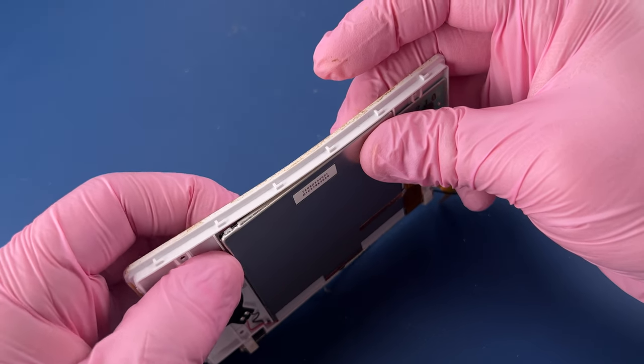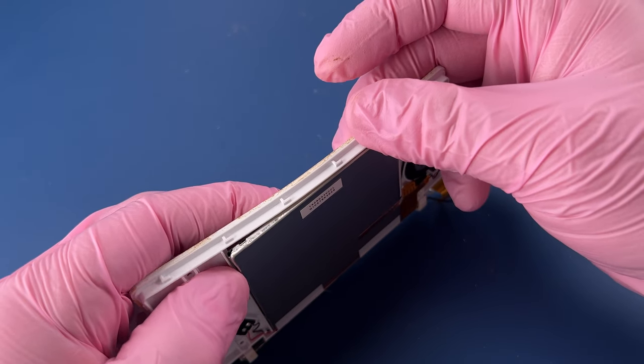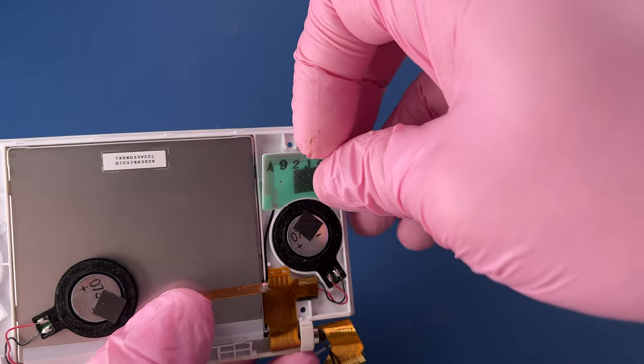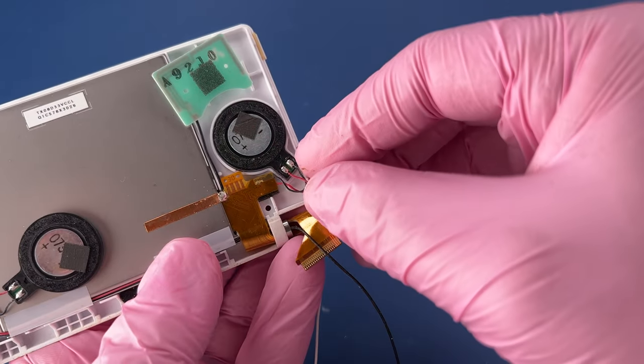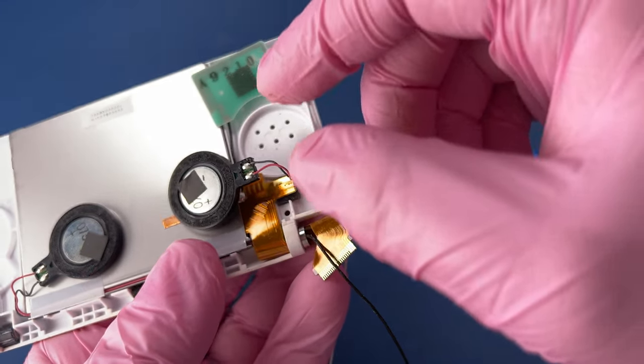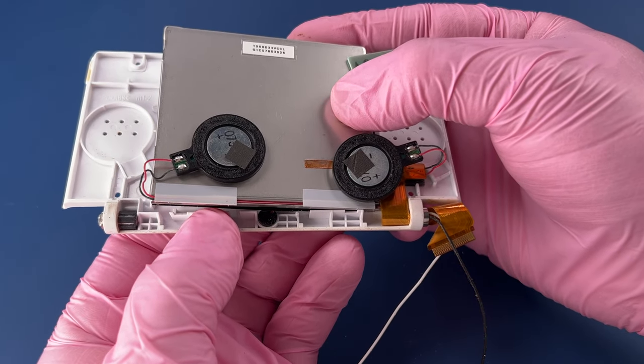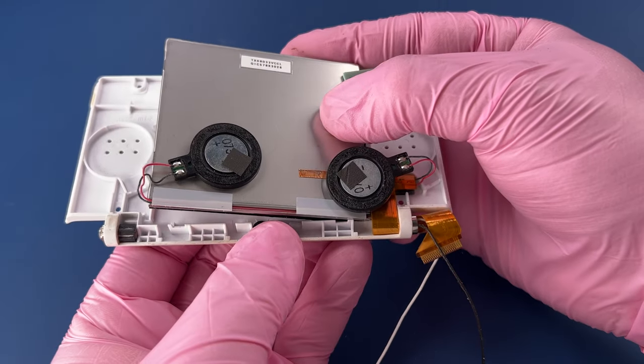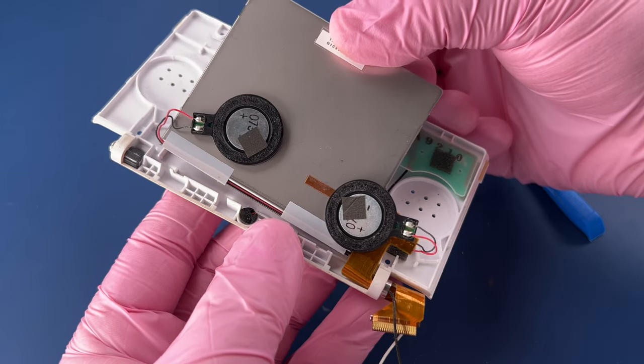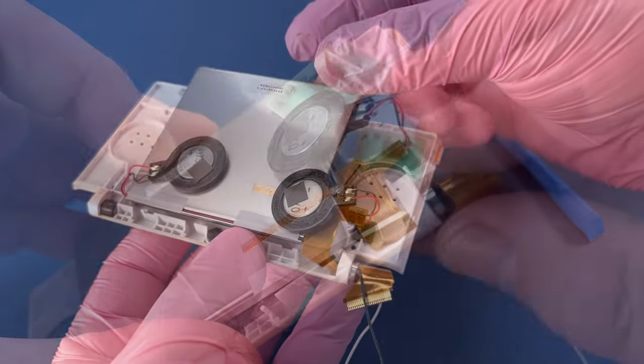I'm going to do that. Sorry, I missed the footage somehow of getting the back of the screen off. Just carefully loosening this screen so that I can move it over just enough to be able to get that ribbon cable through.